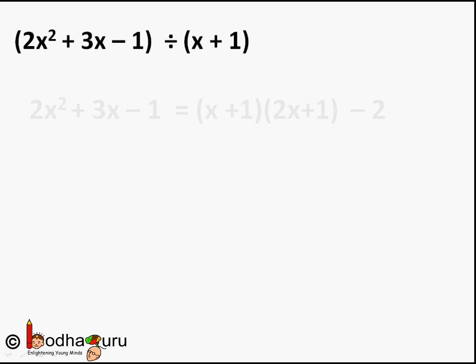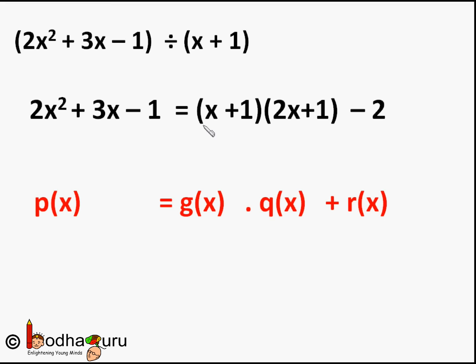Same way we can say 2x² + 3x - 1 divided by x + 1. We can write it as 2x² + 3x - 1 is equal to (x + 1) multiplied by (2x + 1), which is the quotient, minus 2, which is the remainder.